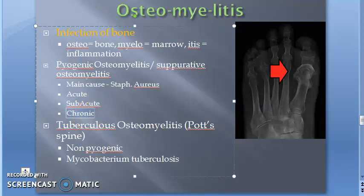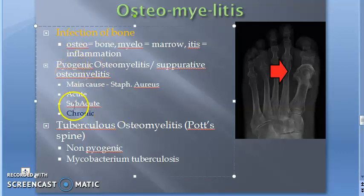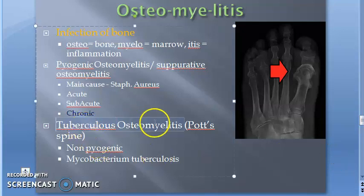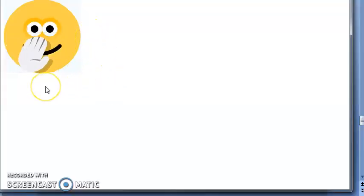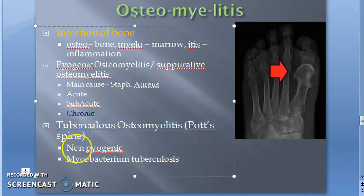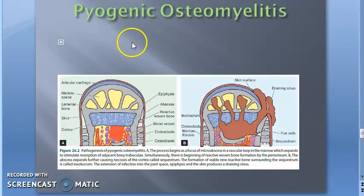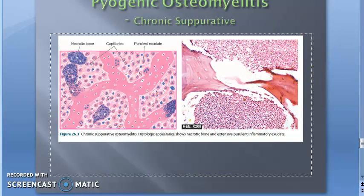If the exam asks about chronic osteomyelitis, you can write about chronic pyogenic osteomyelitis. Tuberculosis osteomyelitis is also called non-pyogenic osteomyelitis. It is caused mainly by Mycobacterium tuberculosis. Now let us look at the details of pyogenic osteomyelitis — we'll look at the microscopy.